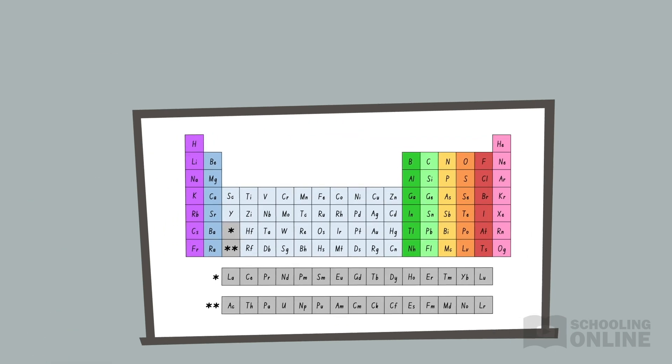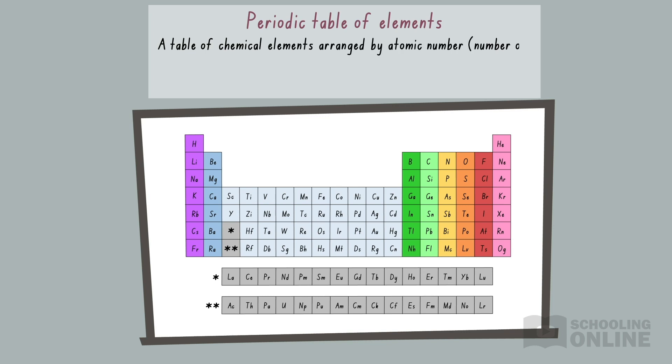Let's summarise what we've learned in the first half of this lesson by defining the periodic table of elements. This is a table of chemical elements ordered by atomic number, that is, the number of protons in the nucleus, so that elements with similar atomic structure, physical properties and chemical properties are grouped together.